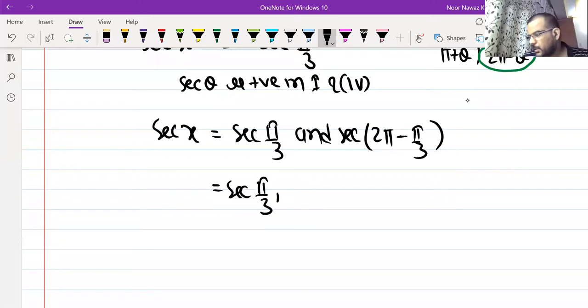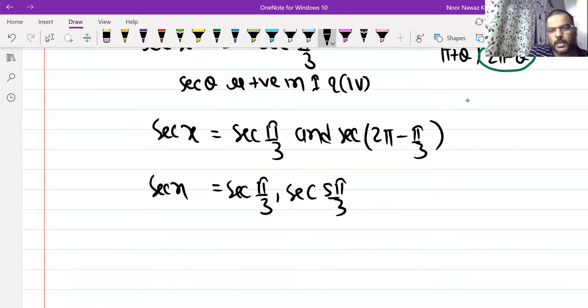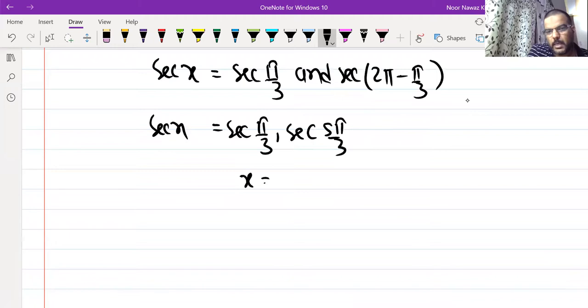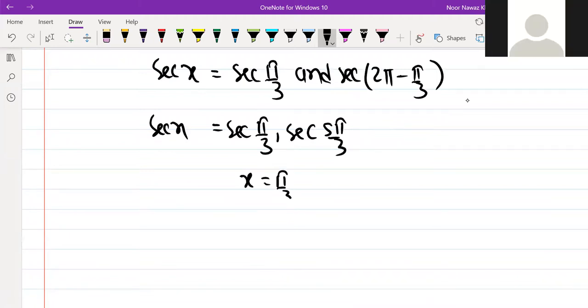This is pi by 3. Computing 2 pi minus pi by 3 gives us 5 pi by 3. sec x equals this. How much is this? 5 pi by 3. This is the answer.